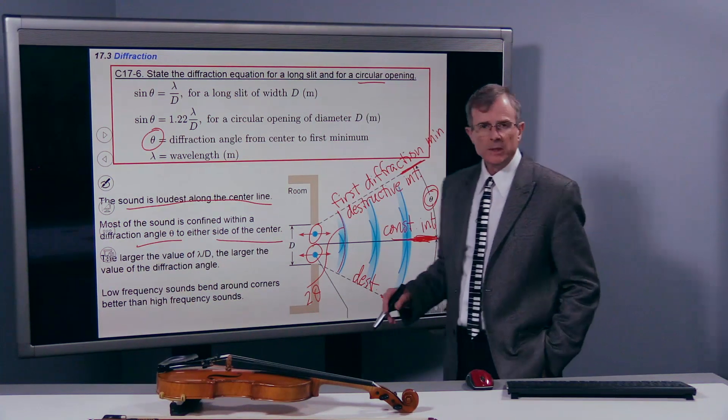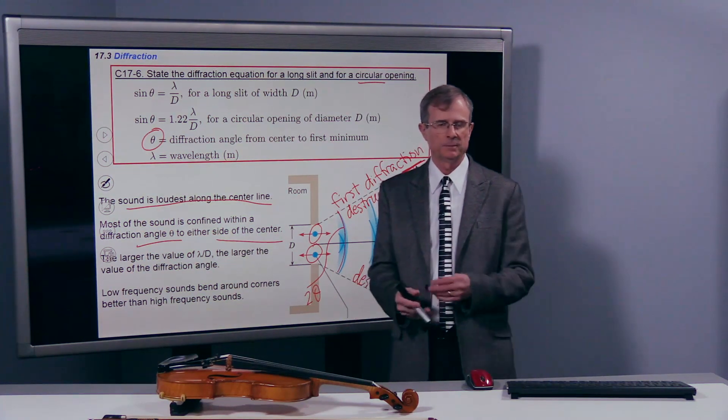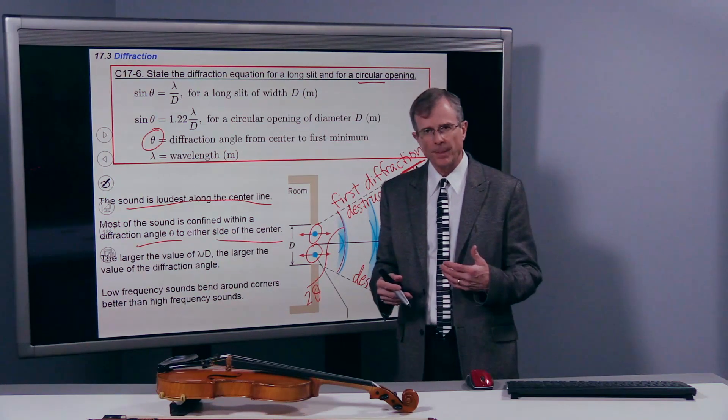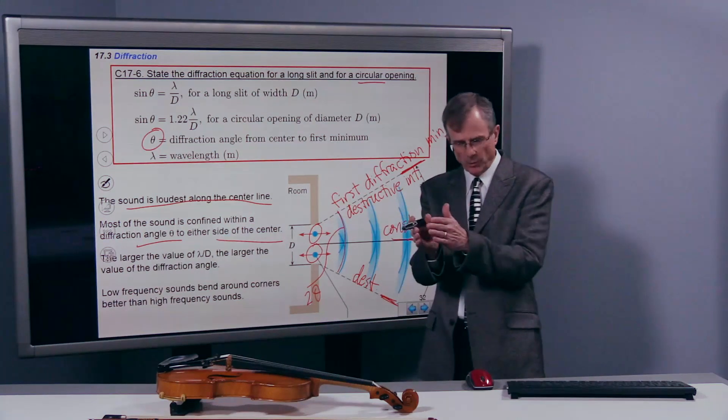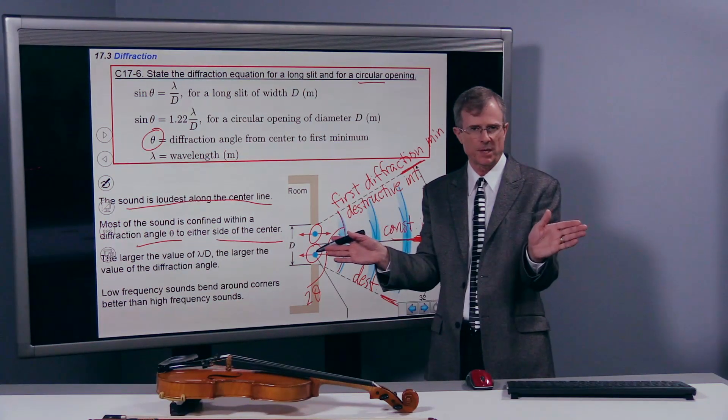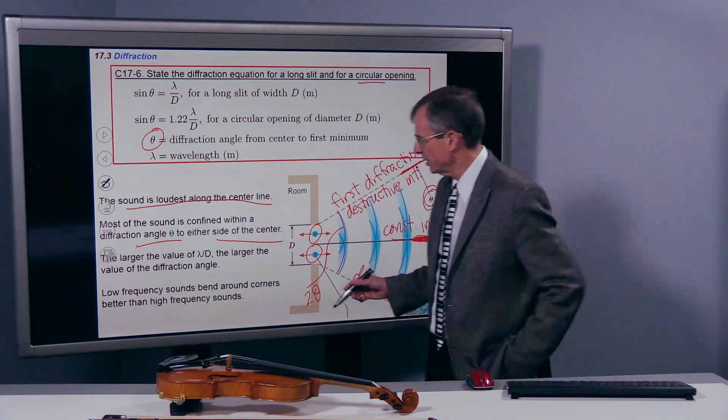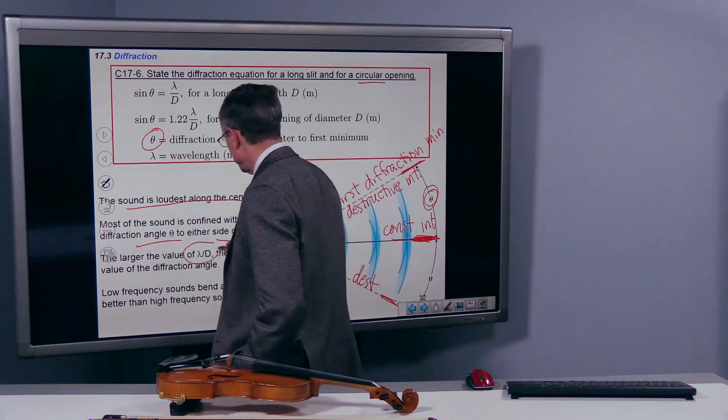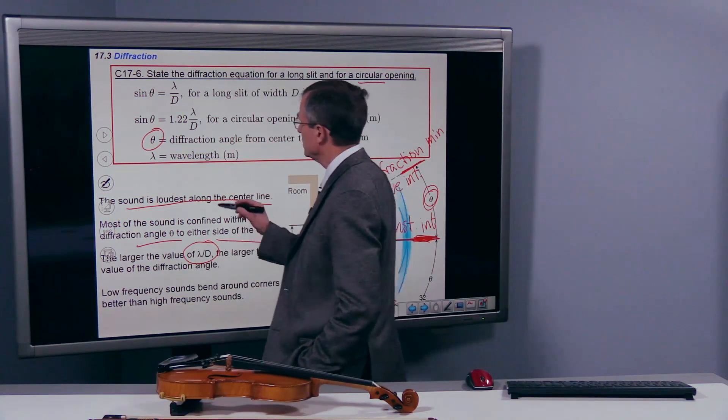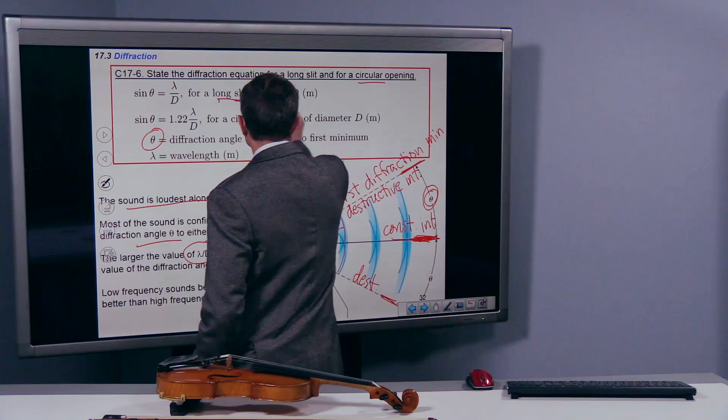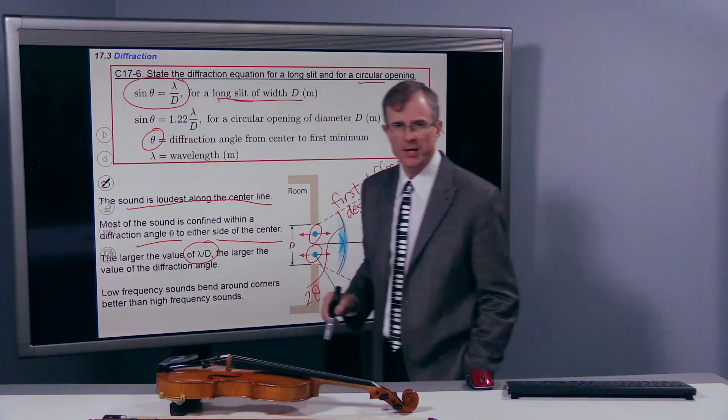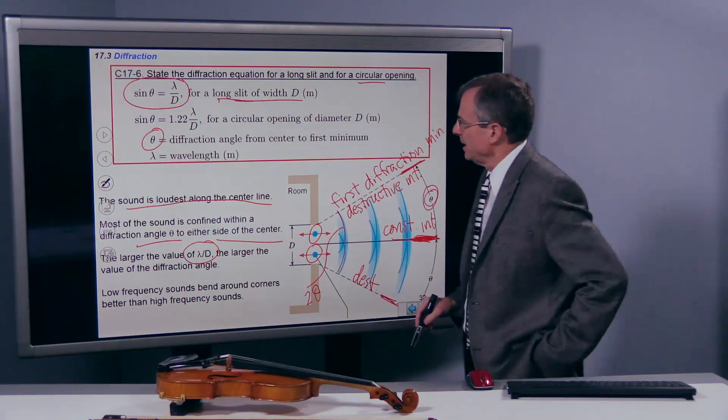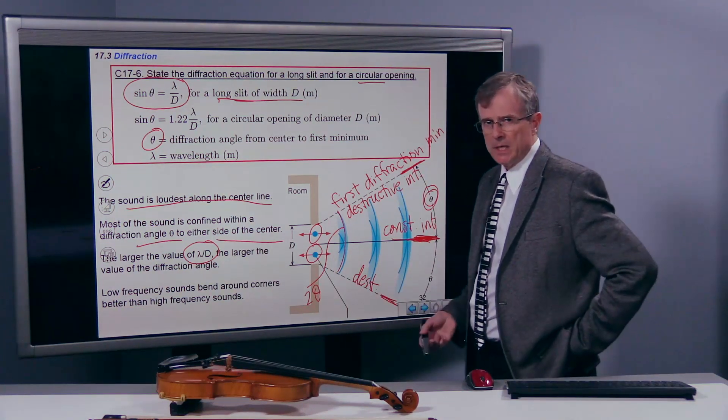So when do we get diffraction? When is that pretty much confined to the center line? And when is there a lot of bending of the sound? And the answer depends on the value of λ over d. So let's take a look at this equation for the long slit of width d. This is the equation for that diffraction angle θ: sin θ equals λ over d.